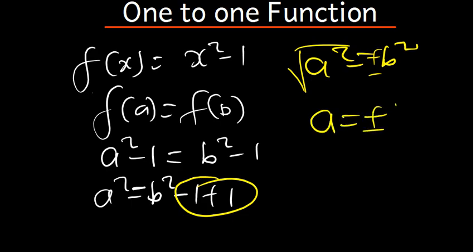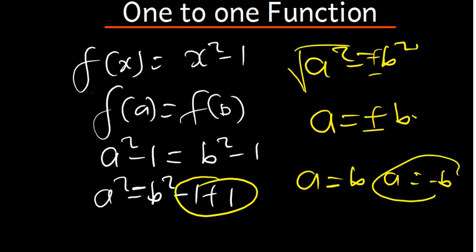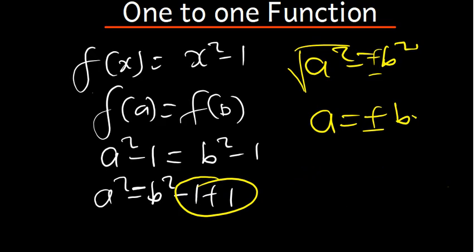This means a = b and a = -b, which is not true. A function can only be one-to-one if a = b, not a = -b. We've got two values, so this function is not one-to-one. After reaching a = ±b, we say this function is not one-to-one since f(a) ≠ f(b).